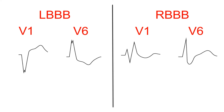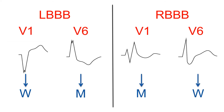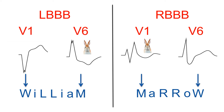Here's a mnemonic to remember the difference between a left bundle branch block and a right bundle branch block on the ECG. In lead V1 with a left bundle branch block, you get what looks like a W pattern, and in lead V6 you get what looks like an M pattern. With a right bundle branch block, in lead V1 you get what looks like an M pattern, and in lead V6 you get what looks like a W pattern. If you remember the mnemonic 'William Marrow,' with the first letter and last letter being V1 and V6 respectively, and the L standing for left bundle branch block and the R standing for right bundle branch block, that'll help to remember. Alternatively, you could remember that you get rabbit ears in lead V1 in right bundle branch block.